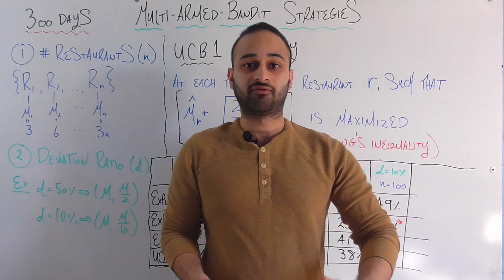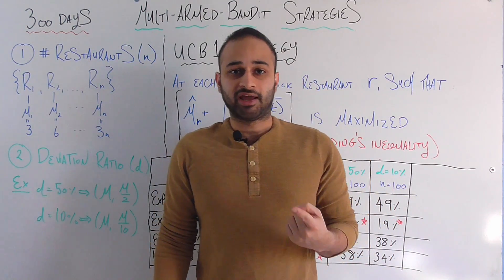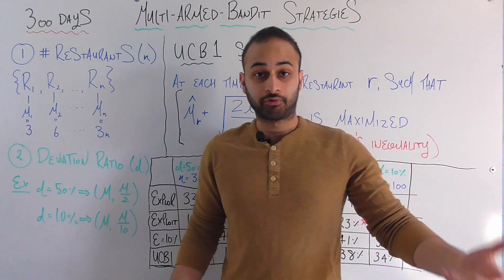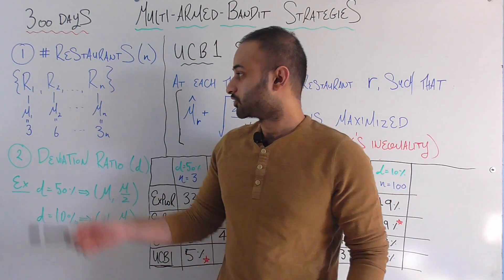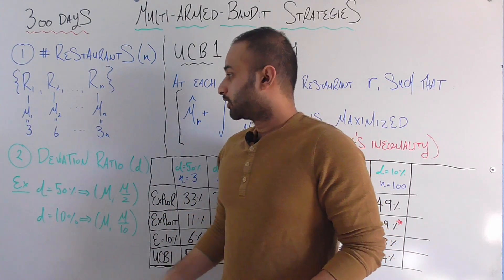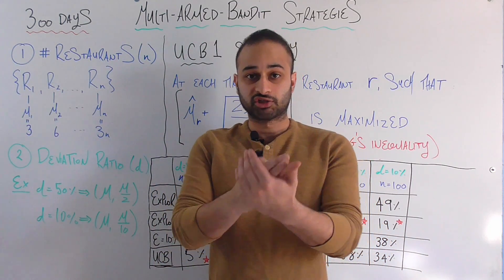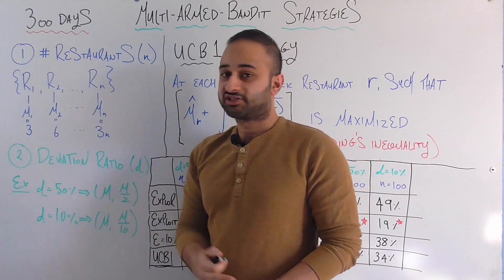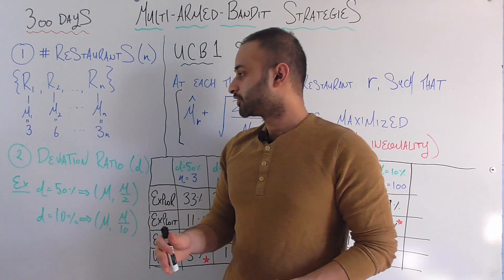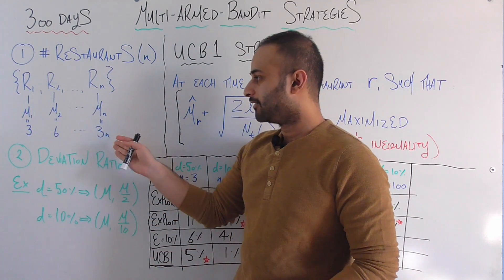Let's look at the different parameters we're going to vary. The first parameter is the number of restaurants, n. Before we just had three restaurants, but in general we can say there's r1, r2, all the way to rn restaurants. In this video, the mean happiness from the first restaurant is three units, the second is six units, and so on. So if there's n restaurants, the mean happiness from the nth restaurant is going to be 3n.